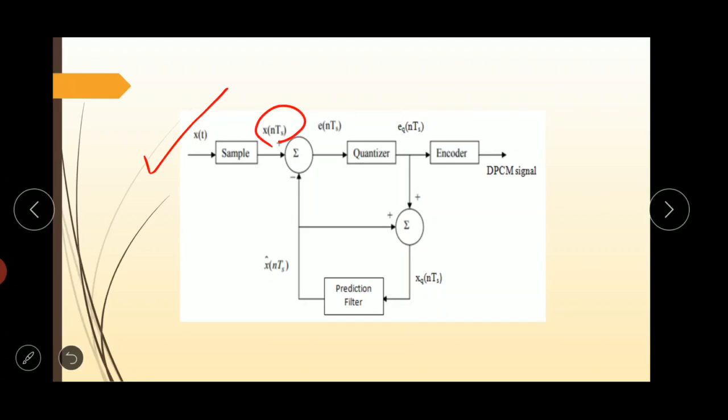And predicted signal is denoted by X cap NTS. This one is the prediction filter. And the output of the prediction filter is denoted as X cap NTS. The comparator finds out the difference between the actual sample value, that is X of NTS, and predicted sample value, that is X cap NTS.